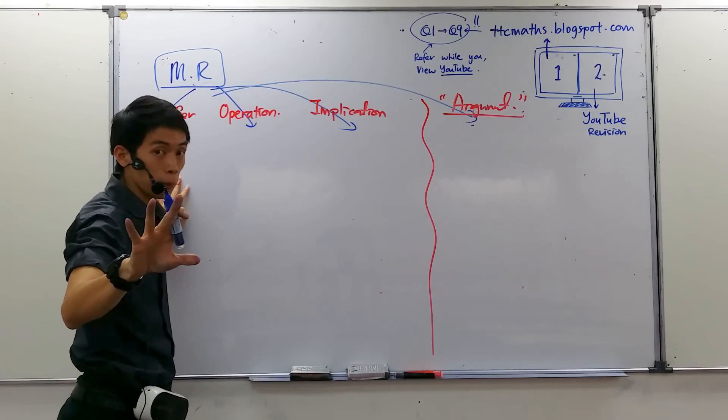Let me remind you: for the quantifier subtopic, they won't give you the label. You have to determine it based on the question. They give you one statement and say 'determine true and false' — you have to use the word 'all' or 'some.' Now I will erase that example and move to operation. Under operation, they will give you two statements.